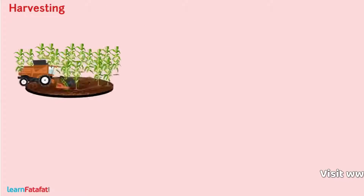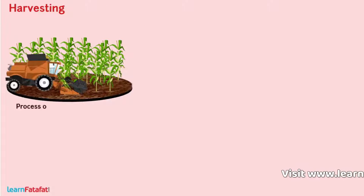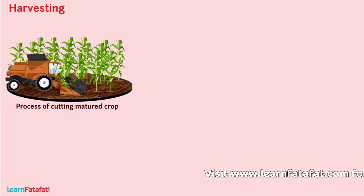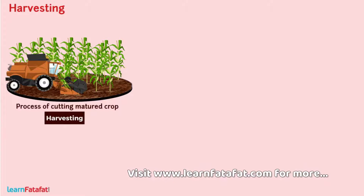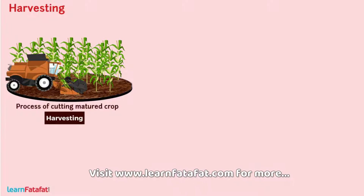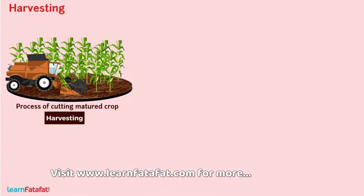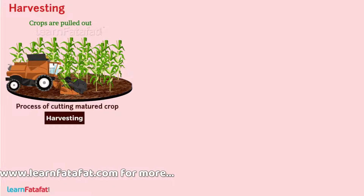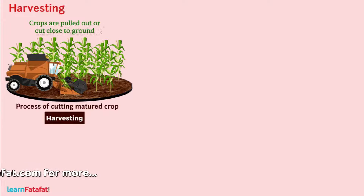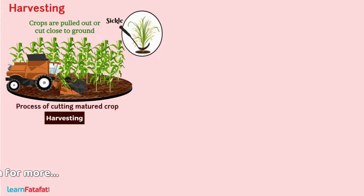Harvesting: The process of cutting matured crop is called harvesting. In this process, crops are pulled out or cut close to the ground either by sickle or by harvester.